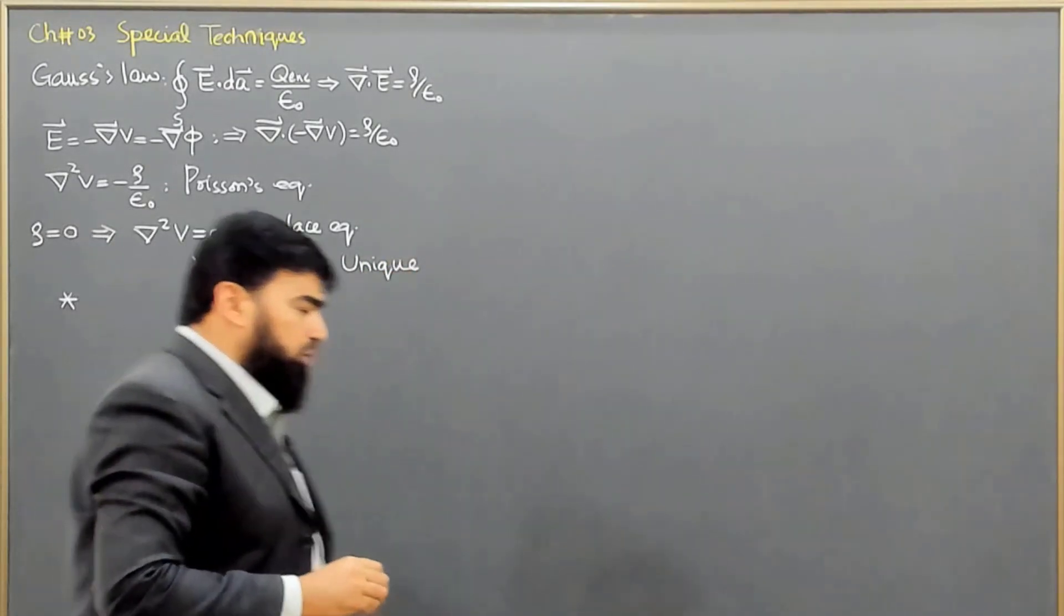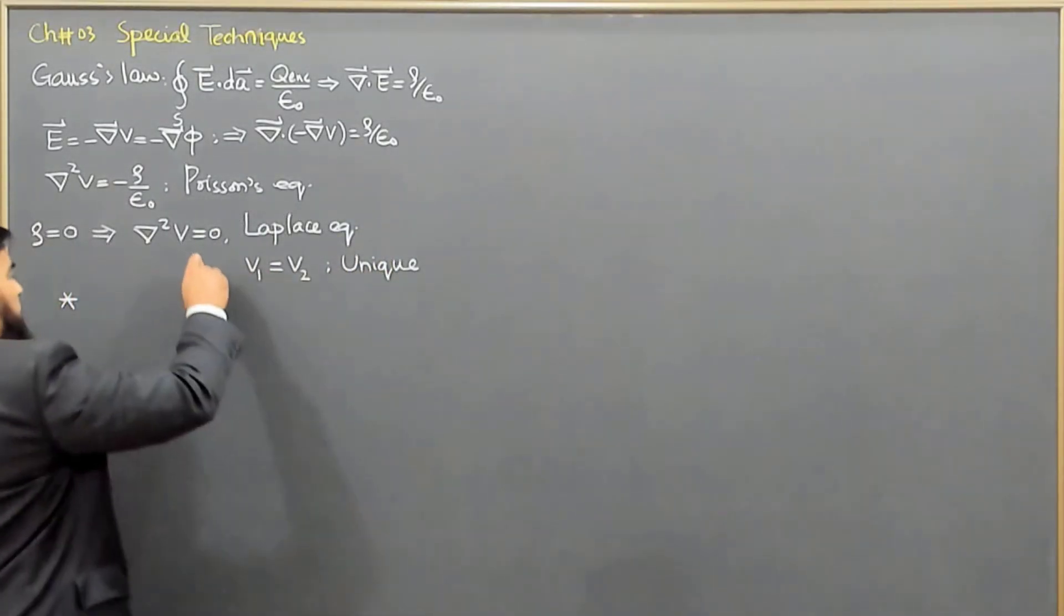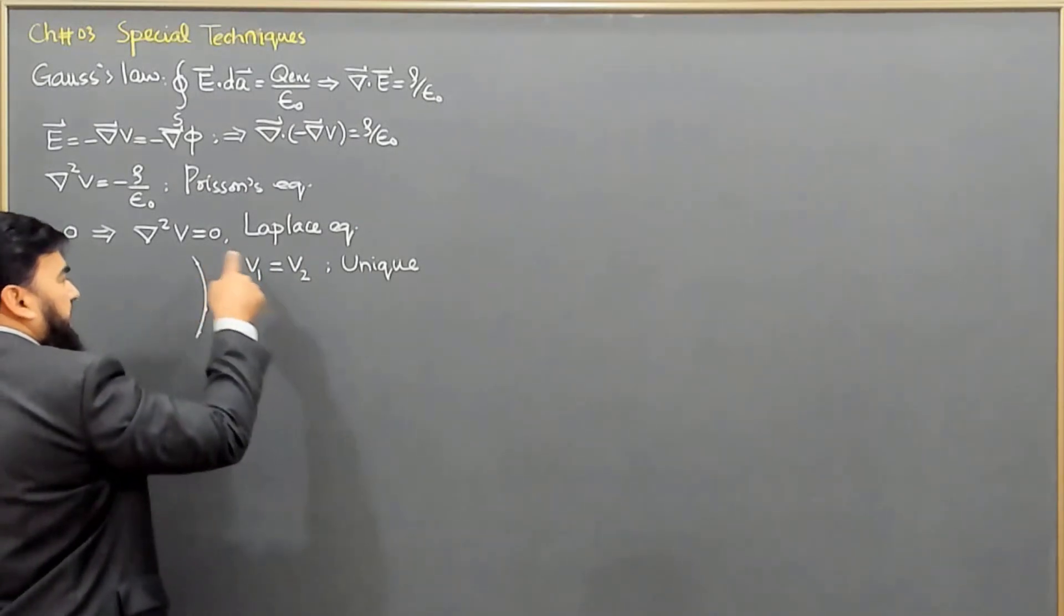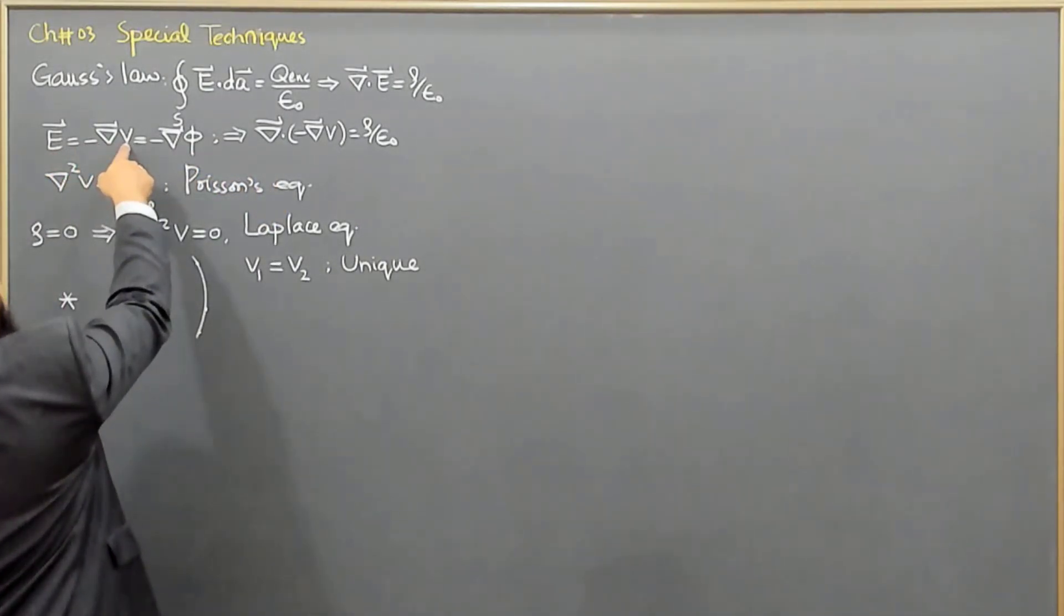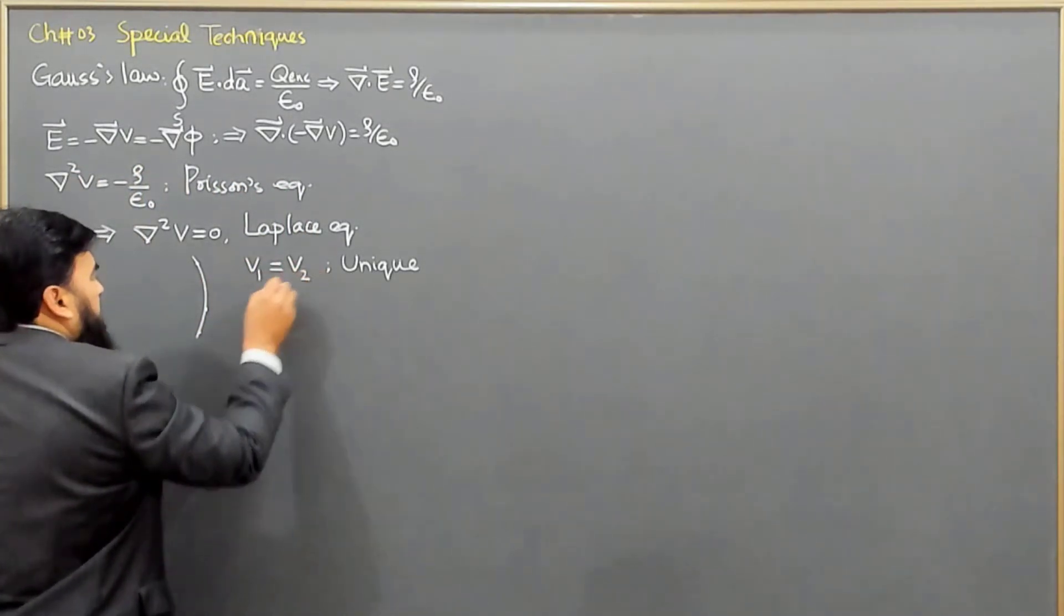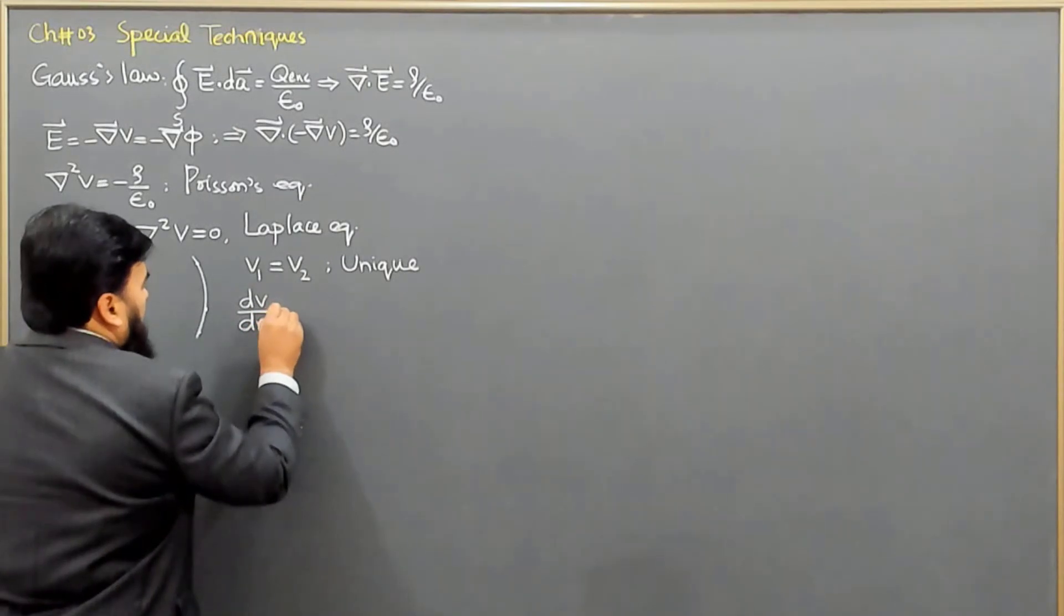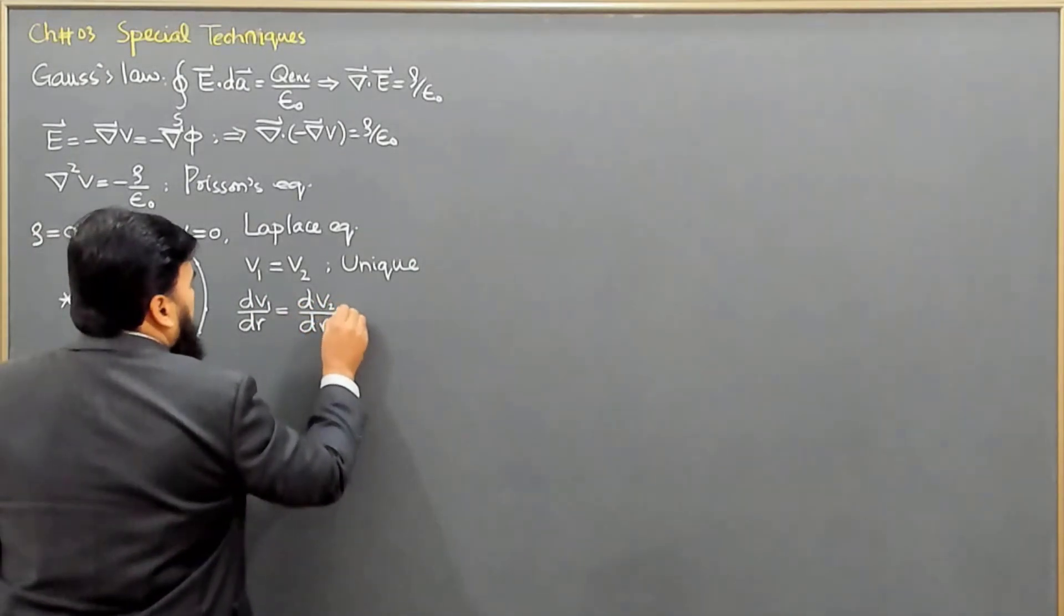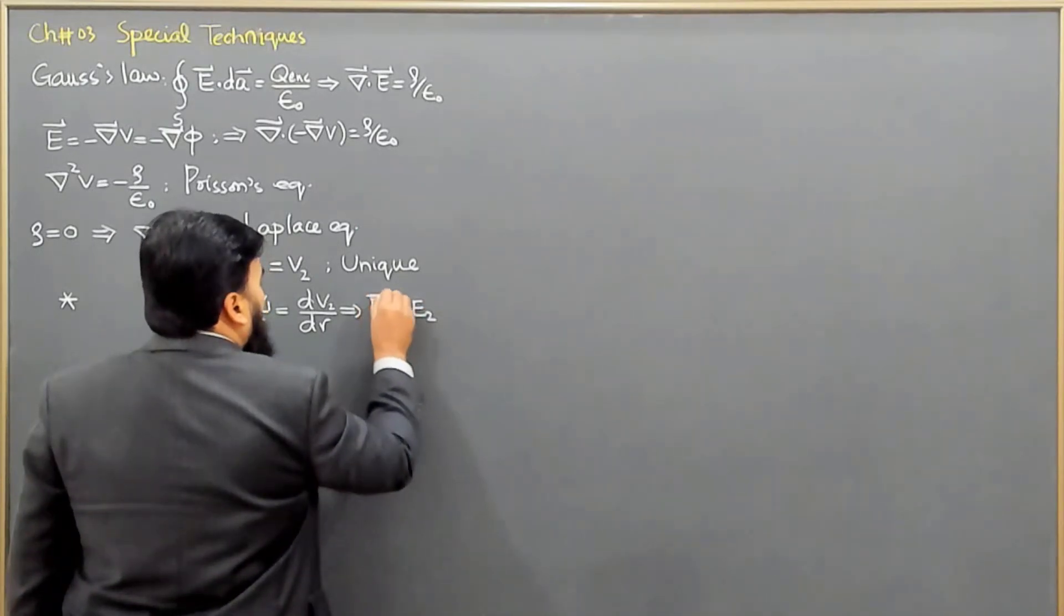And this we call that the solution will always be a unique solution. We cannot have more than one solution for same geometry and same conditions. Similarly, on the same boundary, if V or the potential is the same, then the derivative of this thing will also be the same. And from here, we can see that electric field is basically the space derivative of V. So, I can write this one, that basically, when this is same, then it means that dV over dR is equal, one is equal to dV2 over dR.